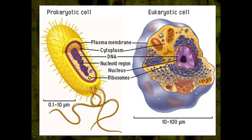A eukaryotic cell does have a nucleus, and the DNA is definitely in there — that is probably what you know most about. Both prokaryotic and eukaryotic cells have my favorite organelle: the ribosome. Ribosomes are free-floating organelles; they are not membrane-bound, and they can also be found in the eukaryotic cell attached to the rough endoplasmic reticulum.